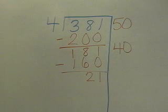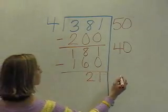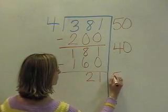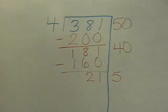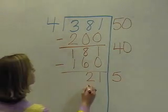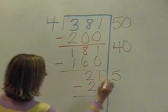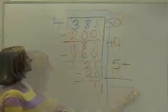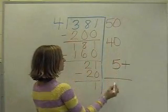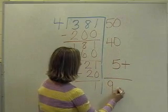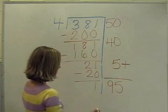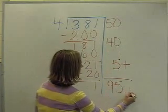Now I can ask myself, how many times will 4 go into 21? I say 4 times 5 is 20. Now I can subtract and get 1. Now I'm going to add 50 plus 40 plus 5 and get 95. My answer is 95, remainder 1.